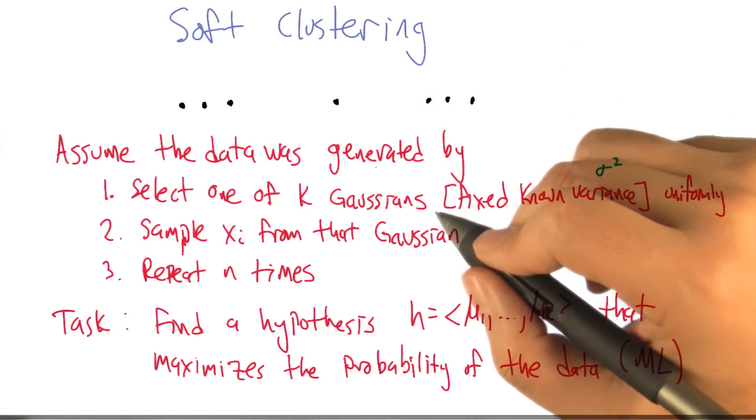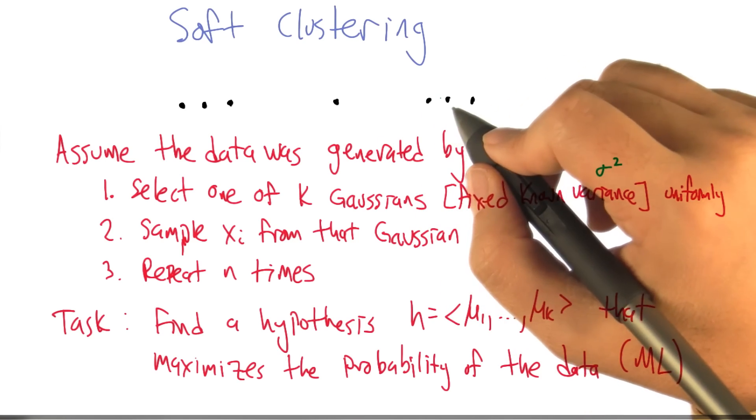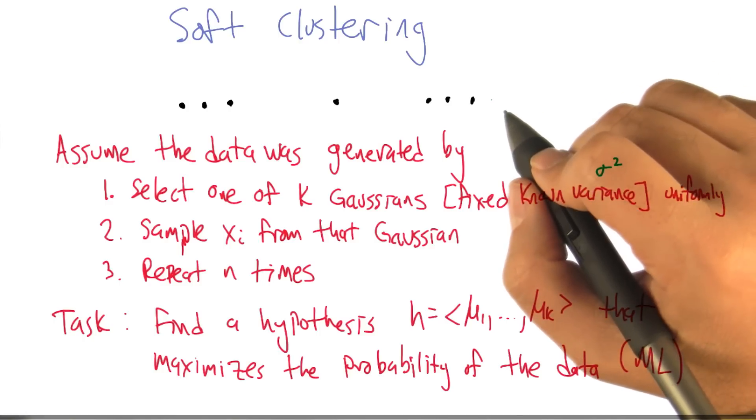All right, and in particular, what we'd like to do now is say, all right, well now what we're really happening is we're given the data, we're thinking kind of Bayesianly, right? We're given the data and we want to try to figure out what the clusters would have been to have generated that data.